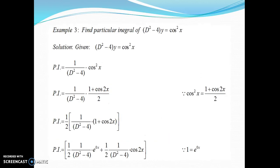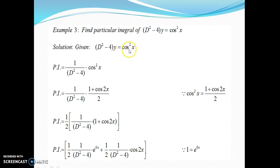Now one more example — this is one of a kind. Find the particular integral of (D² − 4)y = cos²(x). One important remark: it is cos²(x), not cos(2x). Students in exams often write cos²(x) as cos(2x), which is not the case. PI = 1/(D² − 4)·cos²(x). Since this learning video is on rule 2, we need sin(ax) or cos(ax) on the right hand side.